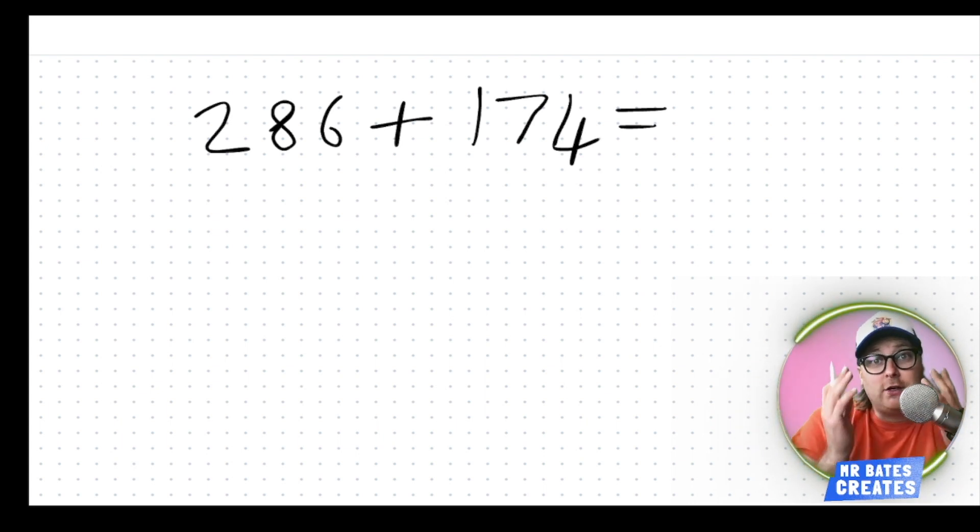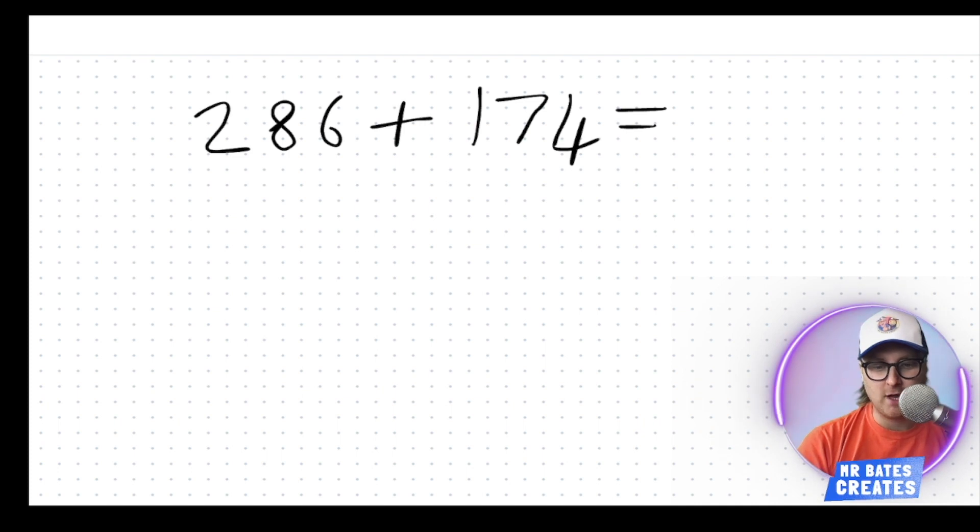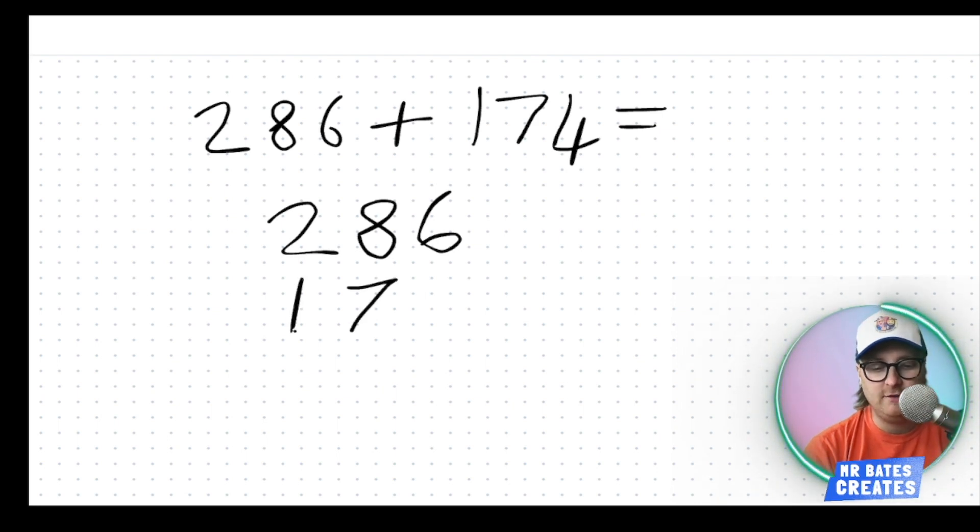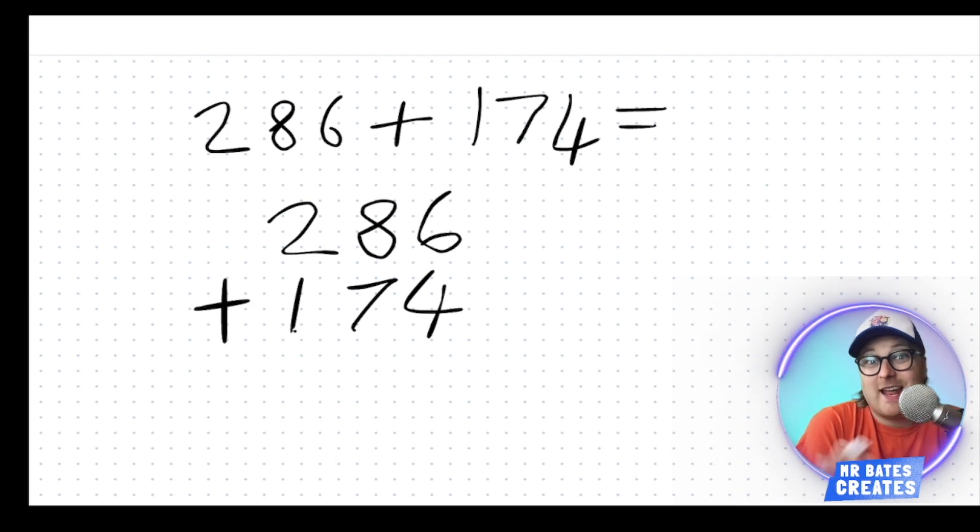286 add 174 equals. Great way it works but when it comes to big numbers that can be quite difficult to write the answer to because quite a lot to do in our head. So we can write it in a column to help us understand the place value of each number.